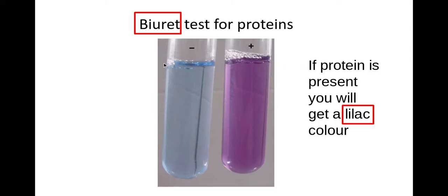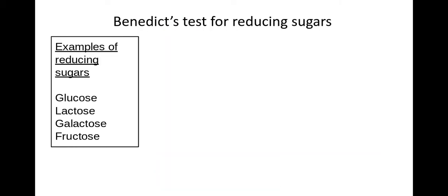The Biuret solution is blue and when you add it to a protein solution it turns a lilac colour. The next test we need to be aware of is the Benedict's test for reducing sugars.